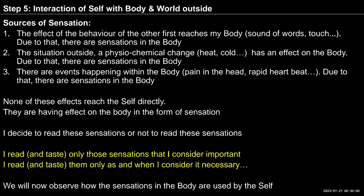In step five, which we introduced yesterday, we are trying to look at the interaction of self with the body and the world outside. We could see that there are three sources of sensation. One is the effect of the behavior of the other, which first reaches my body — sound of words, touch, etc. — and due to that, there are sensations in the body. The second source is the situation outside — a physiochemical chain, maybe heat or cold — and it has an effect on the body. And then there are events happening within the body, like pain in the head or rapid heartbeat, which also produce sensations. These are three sources of sensations, and we were observing them yesterday.